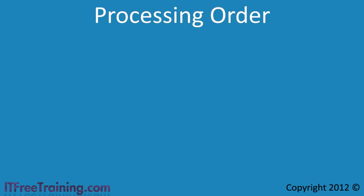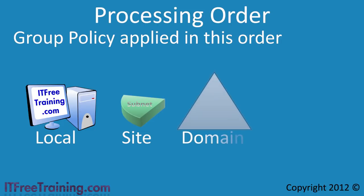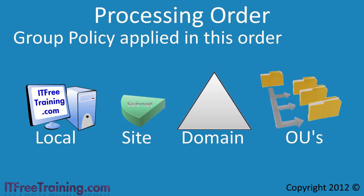When multiple group policies are associated with the same computer, the following order is followed. First, local group policy configured for that computer is applied. After this, any group policies applied at the site level are applied. The next group policy to be applied is at the domain level, while the final group policies to be applied will be organizational units. If there are multiple levels of organizational units, the group policy is applied starting with the top of the tree moving downwards.